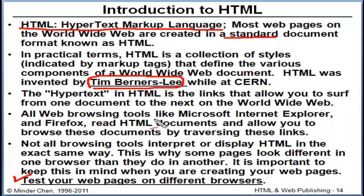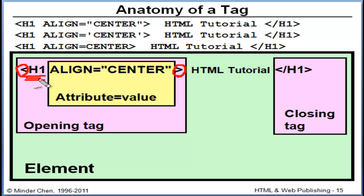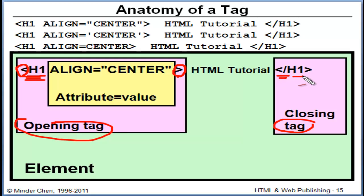Once you finish creating your web pages, it's a good idea to test them on different browsers. Let's look at the basic structure of a tag. I'm going to use H1 as an example. H1 is a section heading — the highest level section heading. Each tag is enclosed using angle brackets and usually comes as a pair, with an opening tag and a closing or ending tag. The ending tag needs to have a forward slash in front of the tag name. The opening tag can sometimes have attributes associated with it.